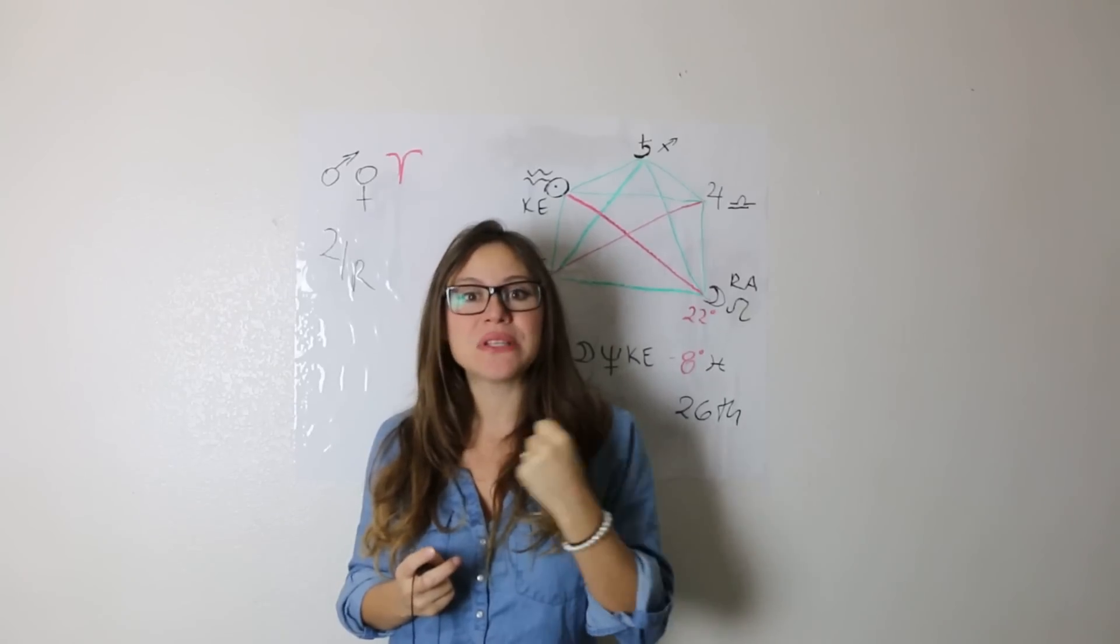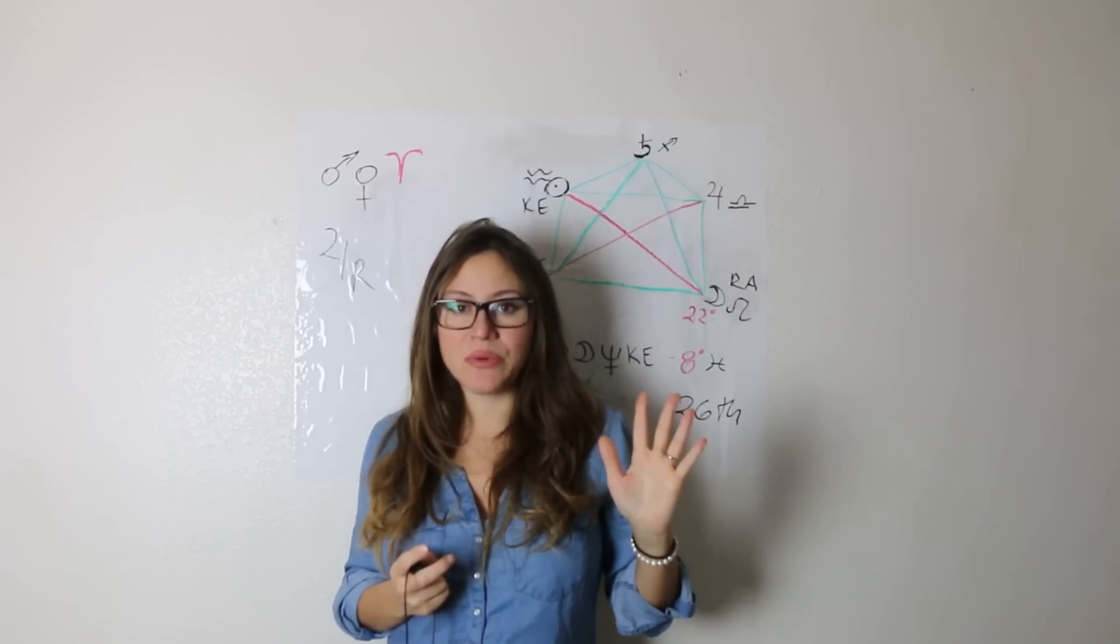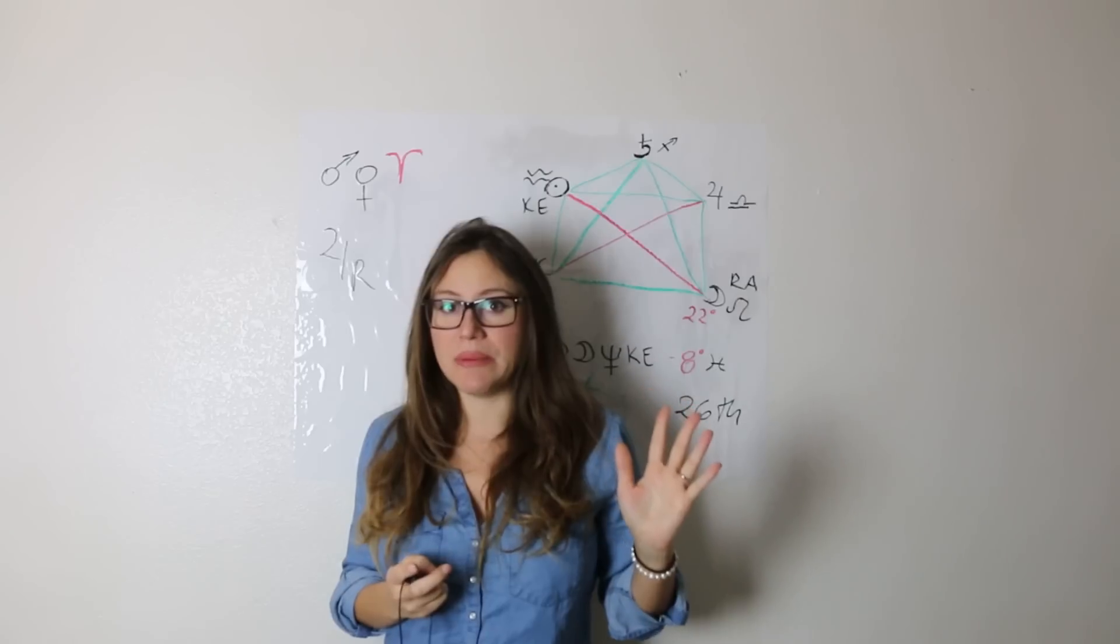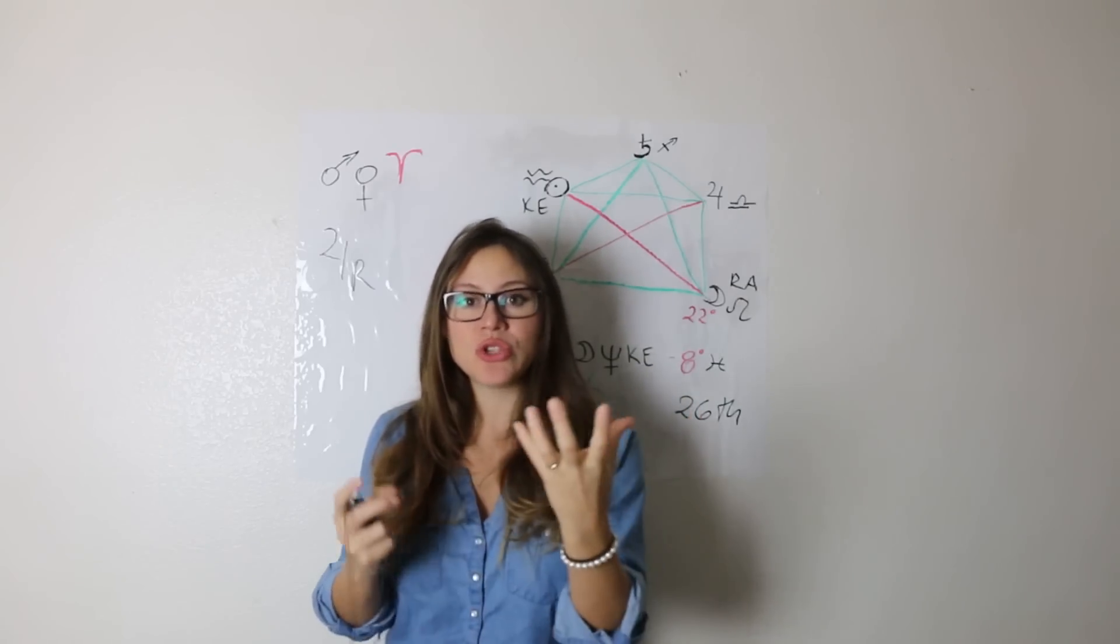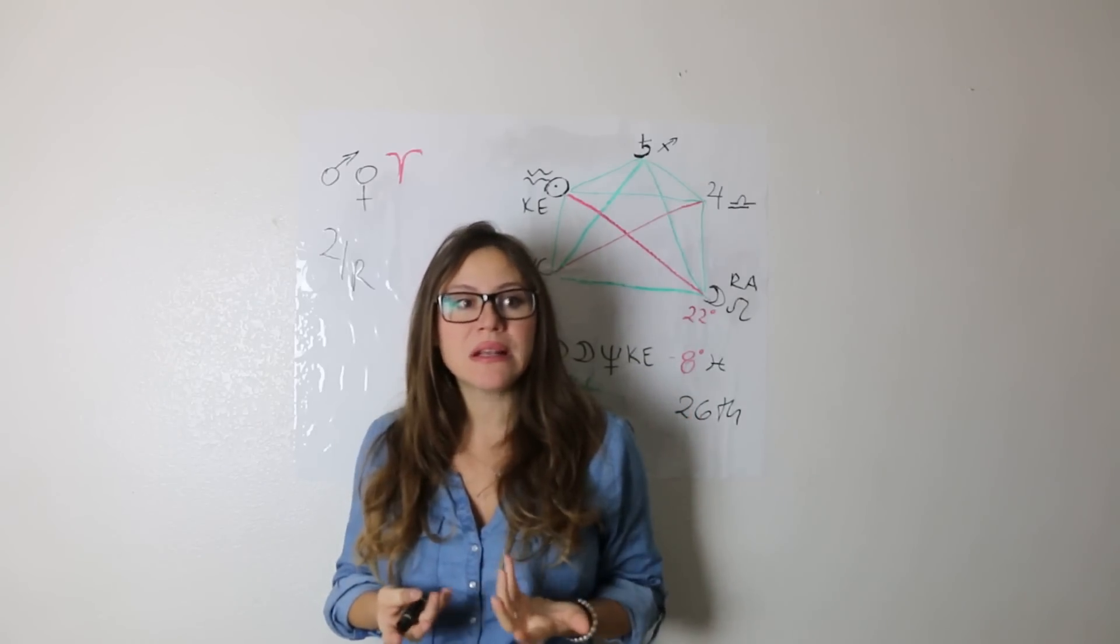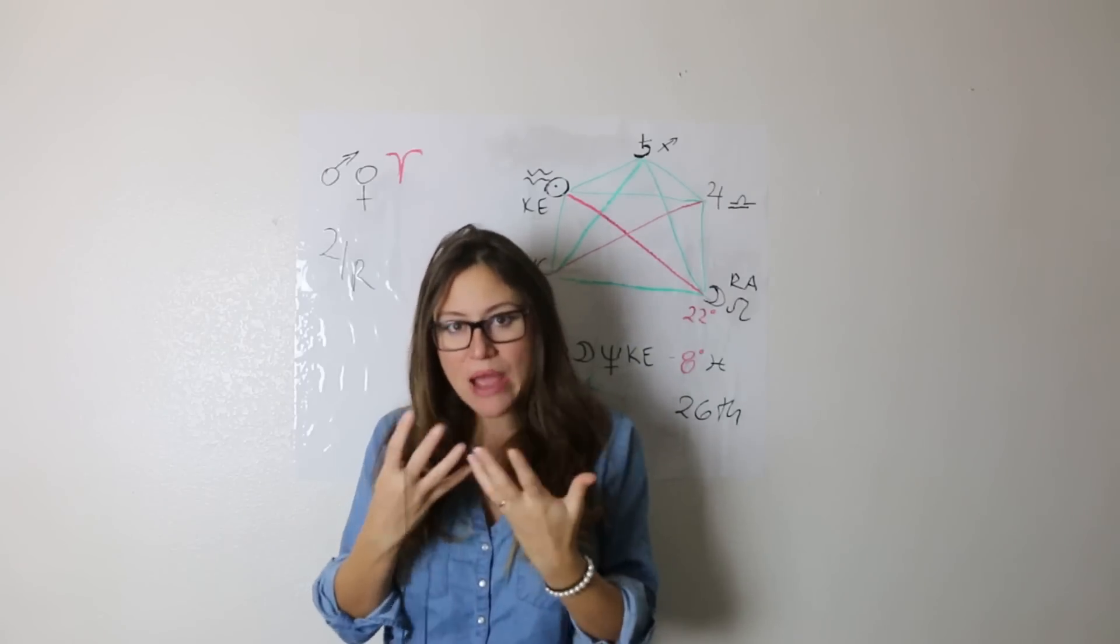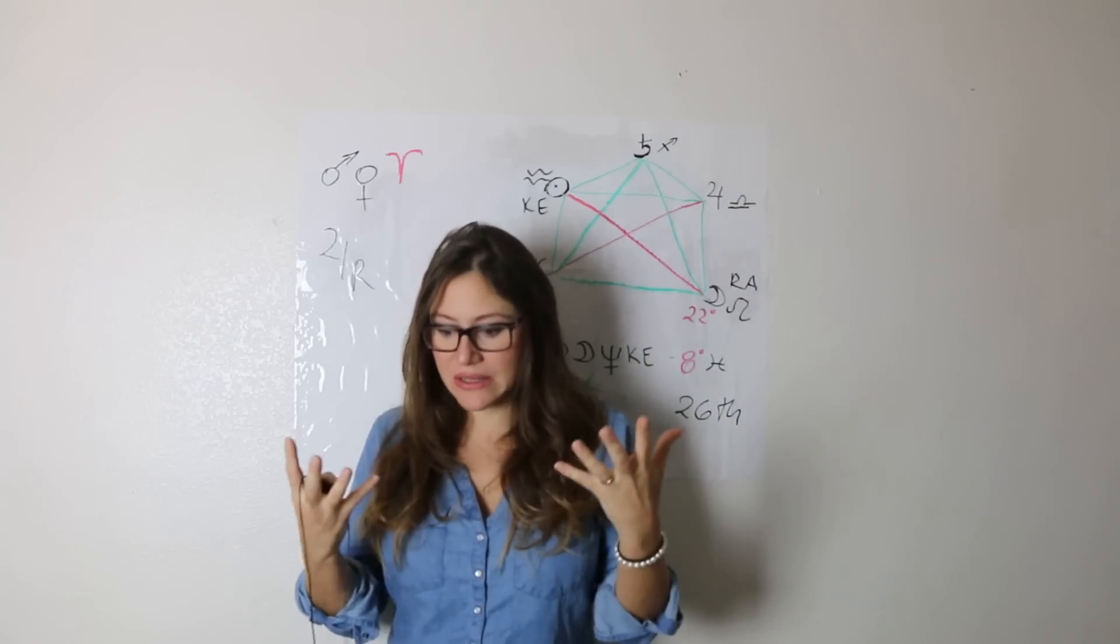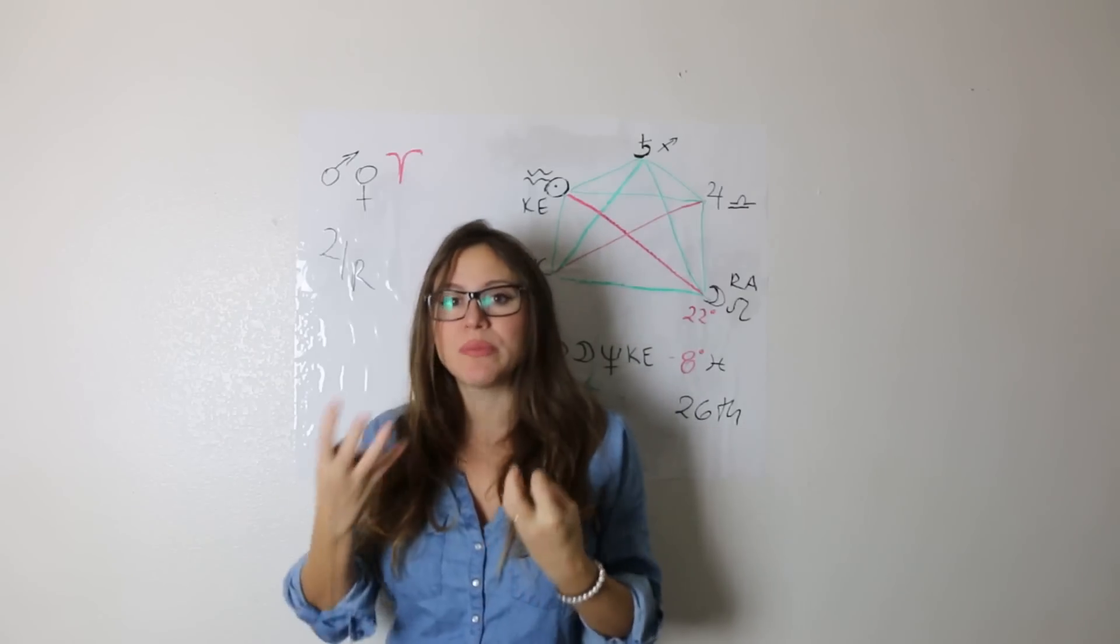We're going to look at the soulmate chart, the ninth divisional navamsha chart, and compare it to the birth chart of one person and the other. This is a technique that is very rare. It's an ancient one given to her in Tibet, so it's amazing guys. I personally use it a lot and it shows whether you're soulmates.